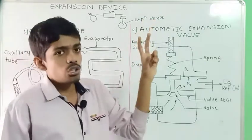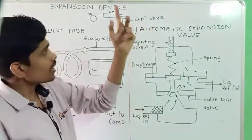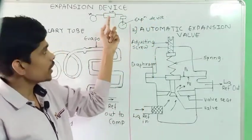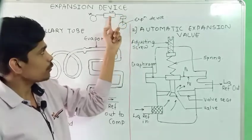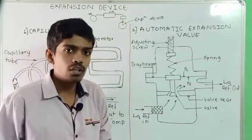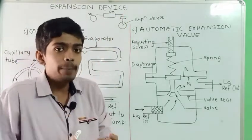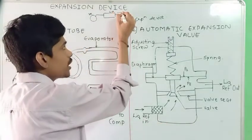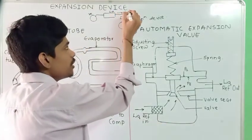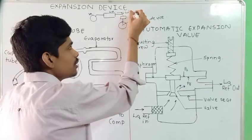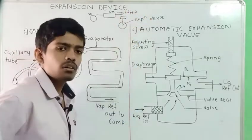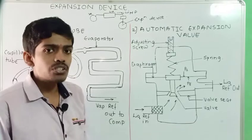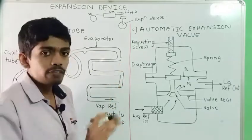The expansion device is used to convert the high pressure side into the low pressure side. Whatever pressure comes from the condenser will be high pressure — there will be high pressure liquid refrigerant coming out of the condenser — and that gets converted into low pressure liquid-vapor refrigerant through the expansion device.